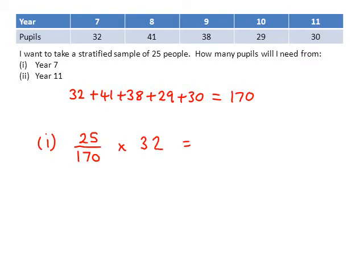When you type this into your calculator, make sure you do 25 divided by 170 and press equals and then times by 32. This gives us the answer of 4.7. Obviously, we can't have 4.7 pupils, so we round up our answer to 5. So 5 is the number of pupils I will need from year 7.